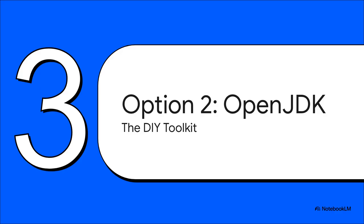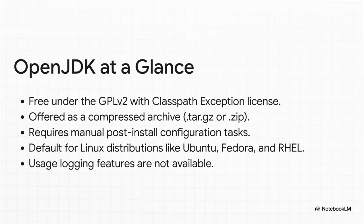On the other side of the coin, we've got OpenJDK. If Oracle's version is the all-in-one package, think of OpenJDK as the flexible, do-it-yourself toolkit. OpenJDK is also totally free, but it's under the classic open-source GPL license. Instead of a nice installer, you just get a compressed file — like a zip or a tarball. This means you have complete control over everything, but you're also on the hook for all the configuration yourself. That level of control is precisely why it's the default choice for Linux distros like Ubuntu and Fedora.